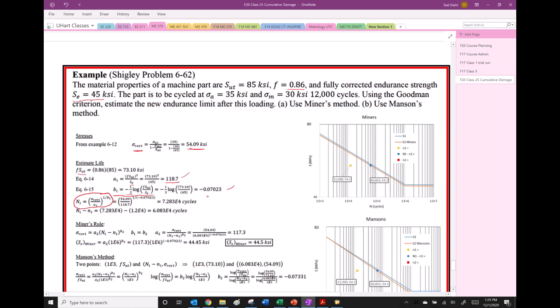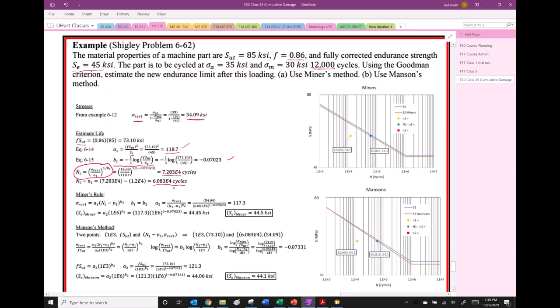And so we have the coefficient, and we have the exponent, and then we take this equation, and we estimate, it's always an estimate, we get the value, so it's like 72,830 cycles. We used up 12,000 of them, so the remaining amount of cycles that we would have left at that stress level would be 60,830. If we're going to use Miner's rule to try to estimate a new SE, what we do is we need to find a new coefficient, because the slope is going to be the same.